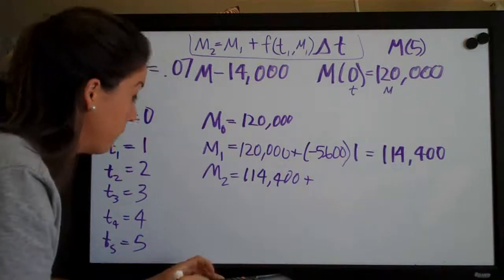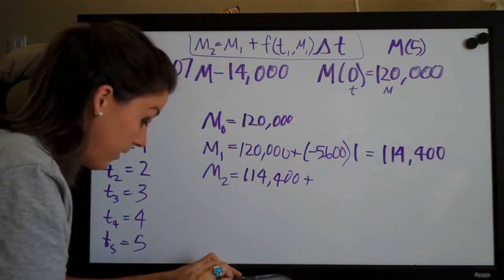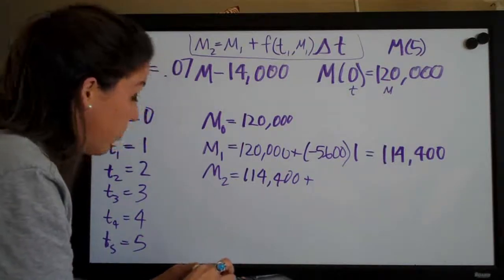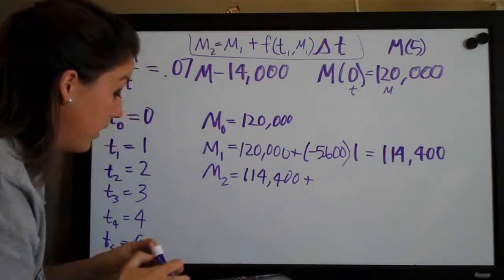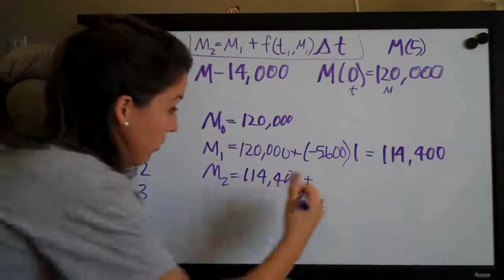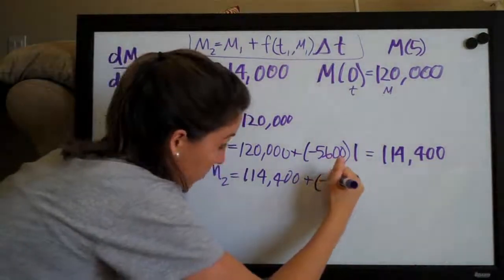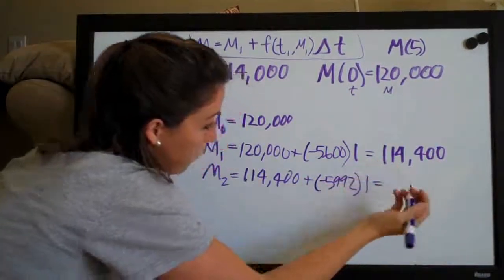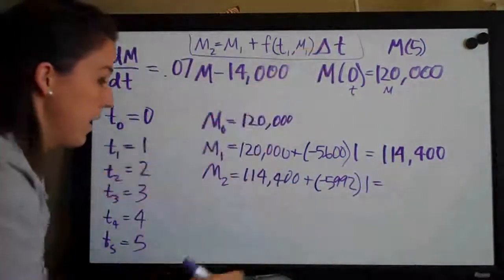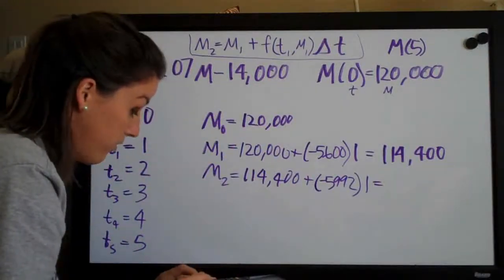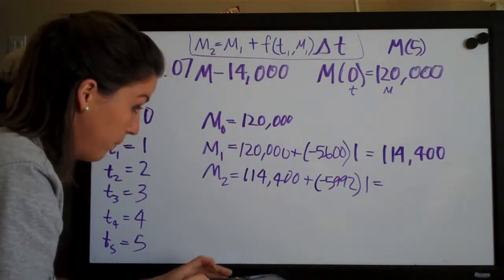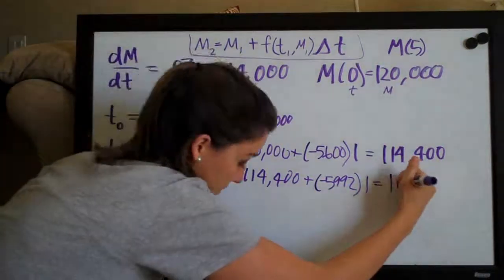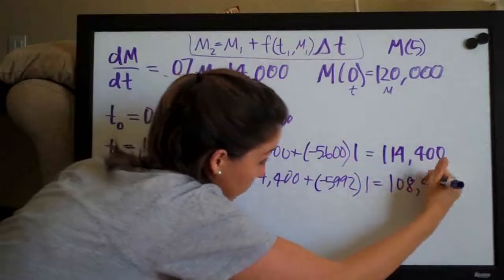So times 0.07 minus 14. So when we plug in that value, we get negative 5992 and then times 1 for delta t, right? And so now we have 114,400 plus negative 5992 and we get 108,408.